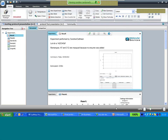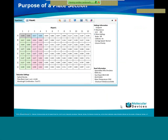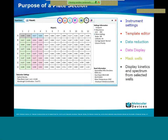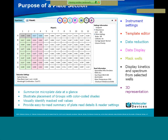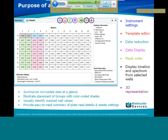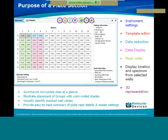Moving on to the plate section: the plate section menu allows you to access instrument settings, the template editor, data reduction, data display, masking wells, kinetic and spectrum display from selected wells, and 3D representation. The aim of the plate is to summarize microplate data at a glance, illustrate placements of groups with color-coded shapes, visually identify masked wells, and provide an easy-to-read summary of plate details.